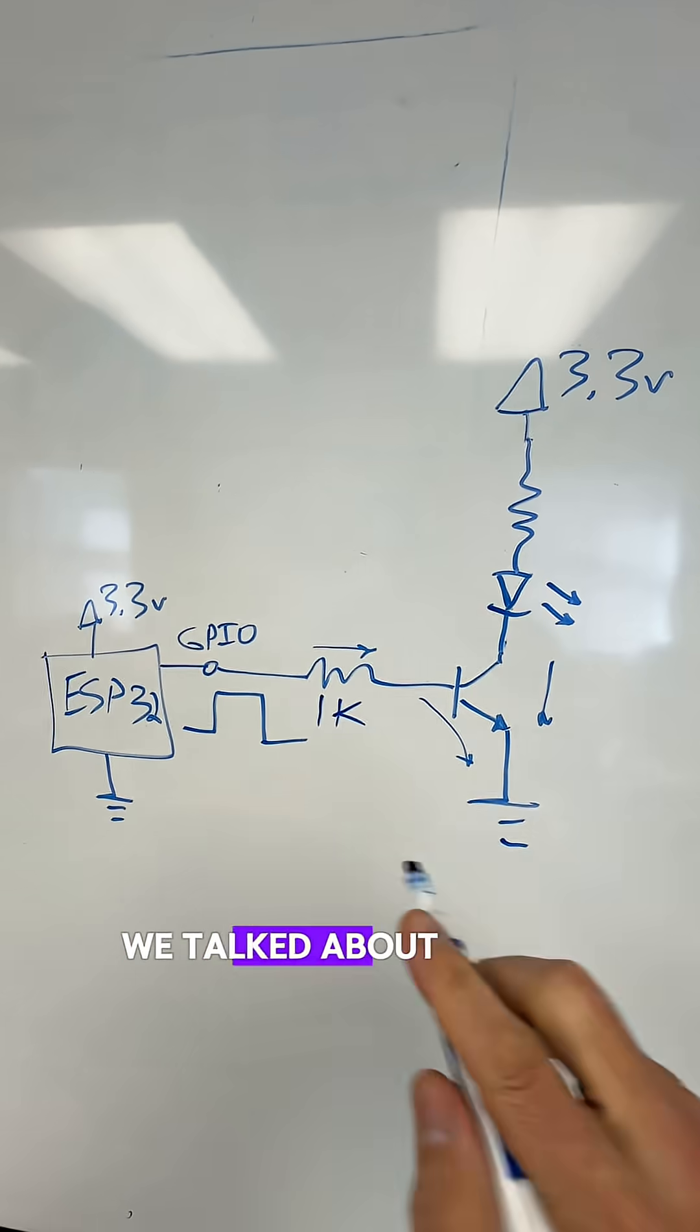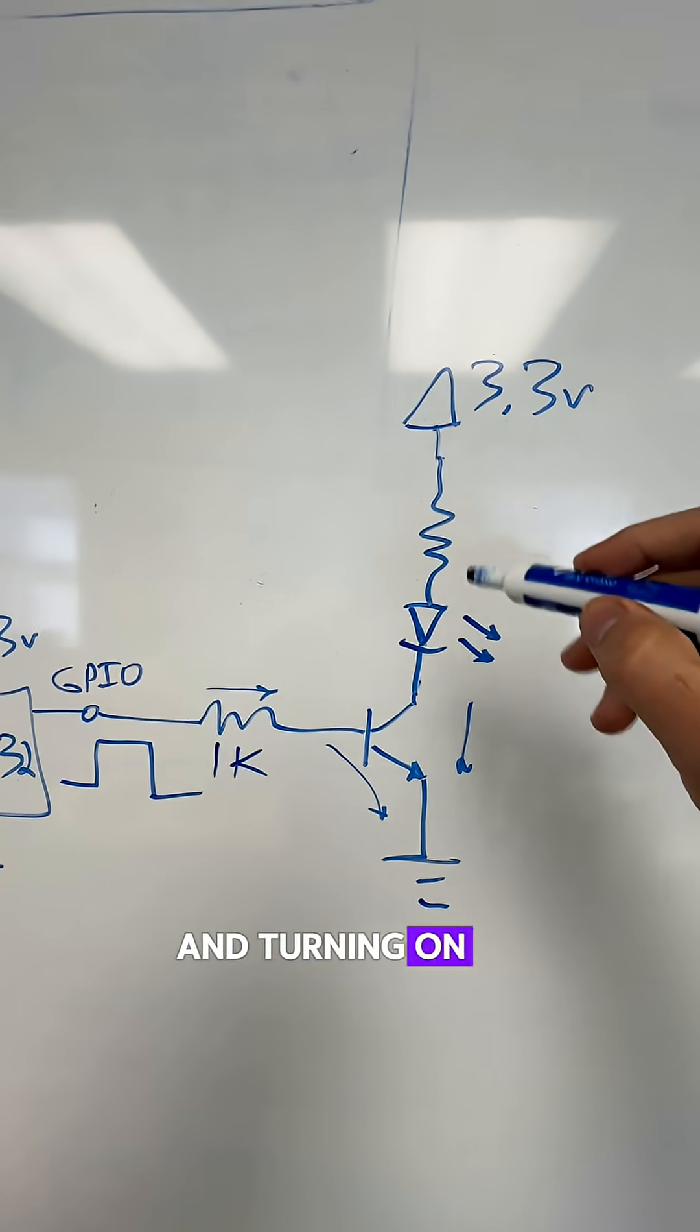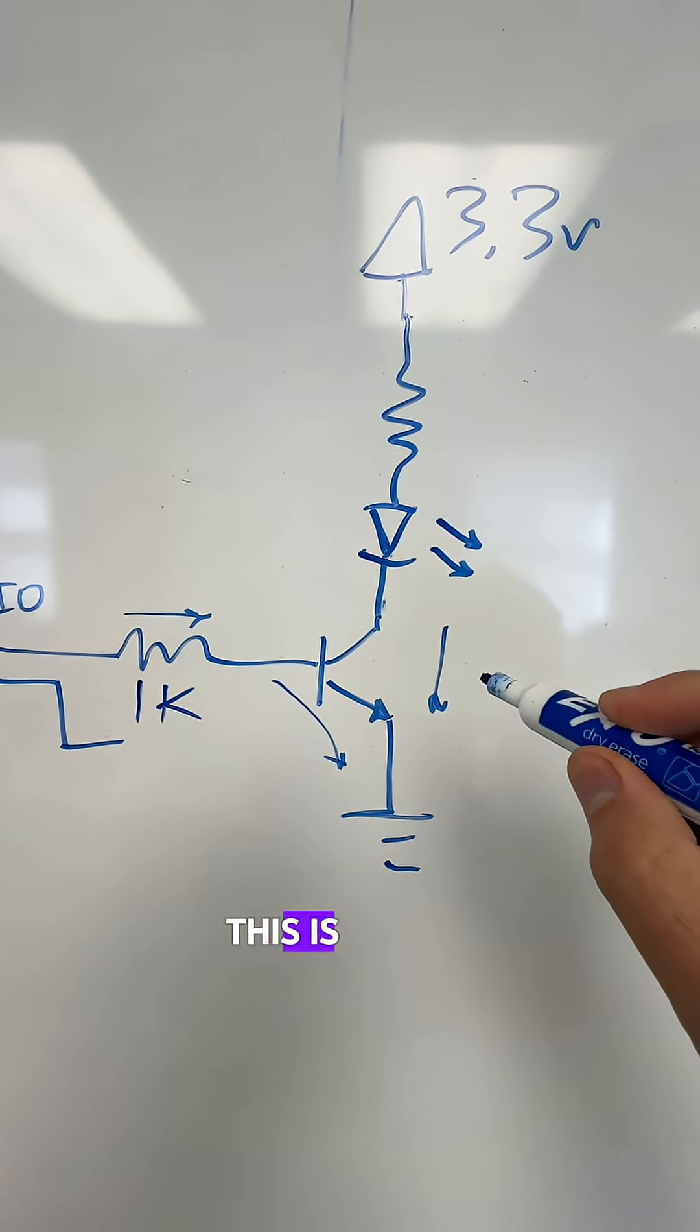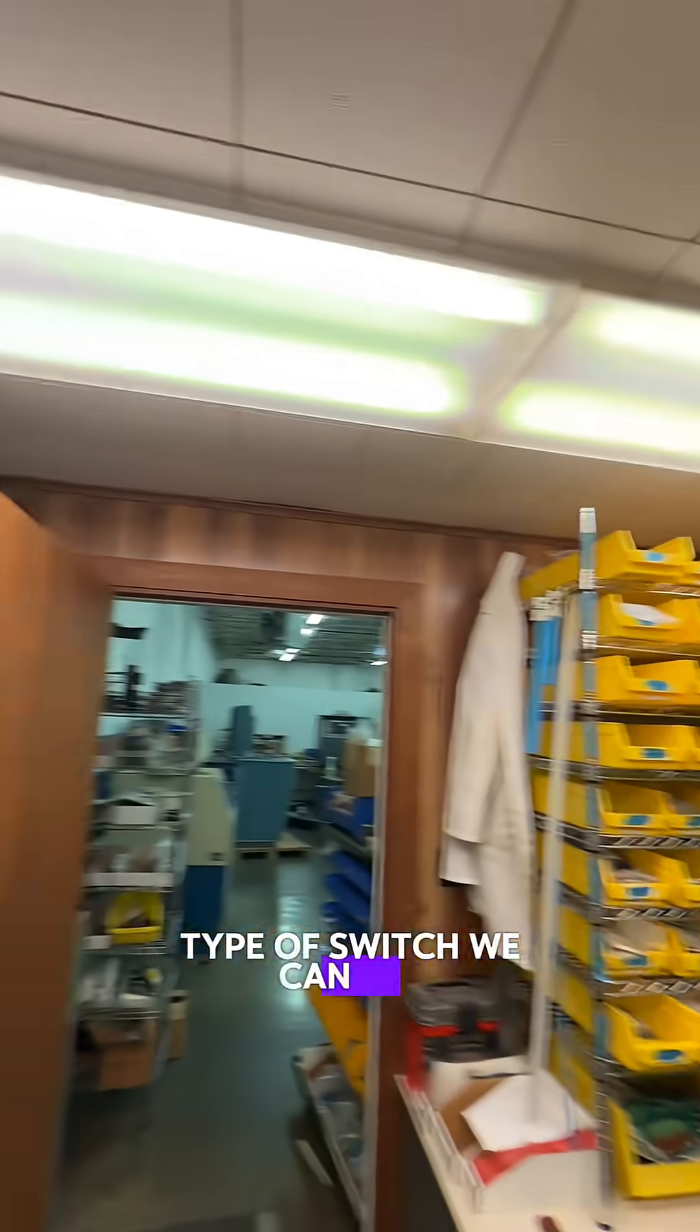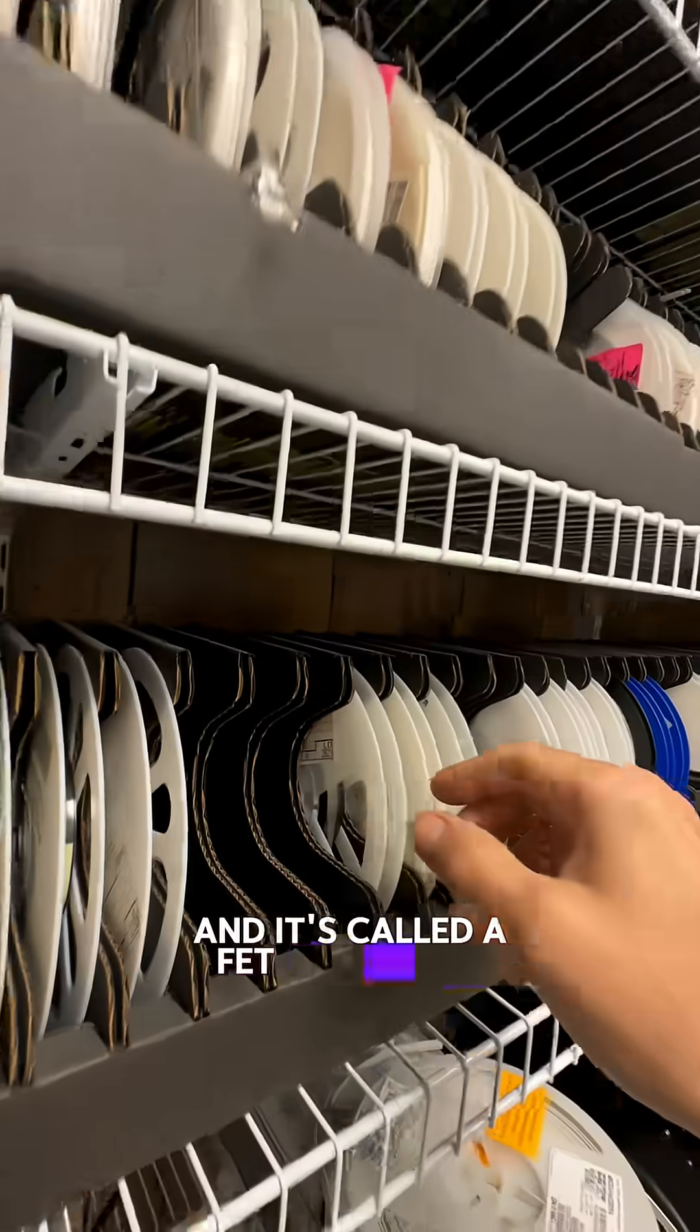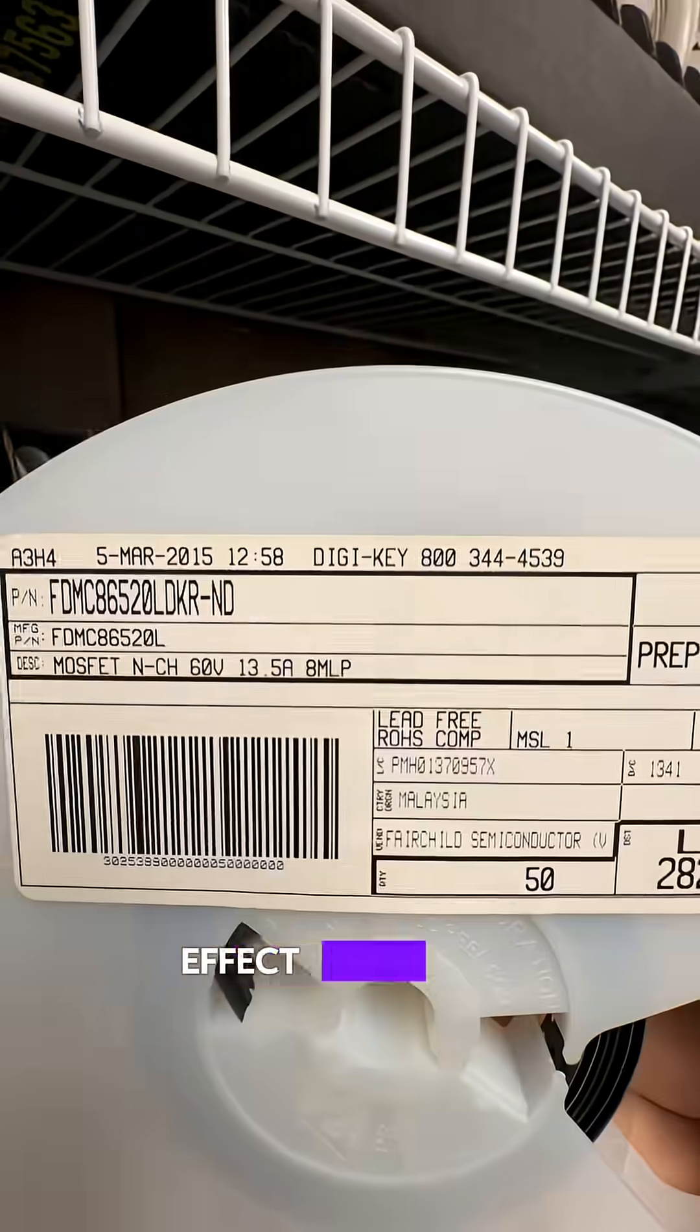In an earlier video we talked about having a microcontroller and turning on an LED through a transistor. This is an NPN BJT. There's a different type of switch we can use and it's called a FET. FET stands for Field Effect Transistor.